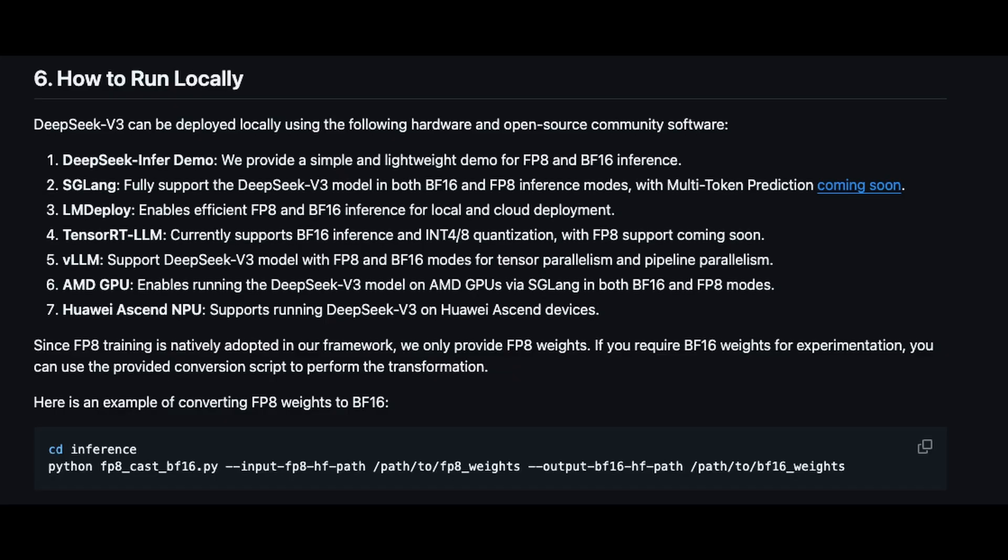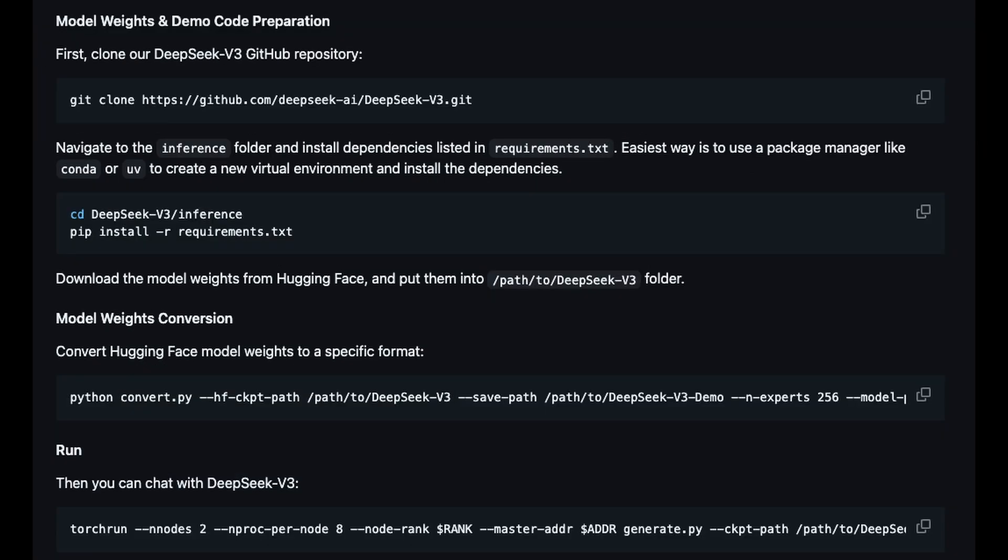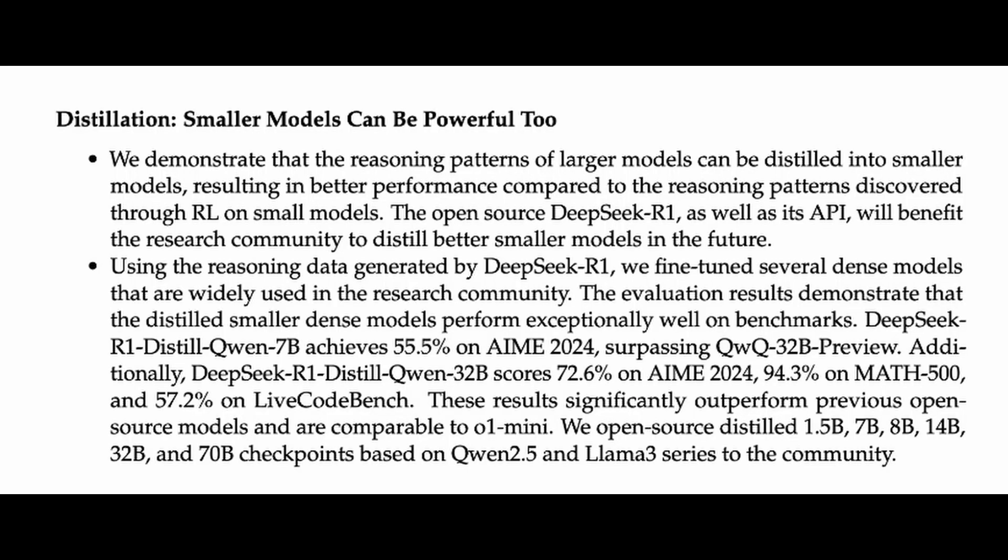But guess what? Here's the cool part. DeepSeek R1, like all of the DeepSeek models, is offering open weights. We're not saying open source exactly, since the training data isn't public. However, this is a game changer. Instead of paying OpenAI for every little thing, you can run R1 on your own server or even on your own computer for way less cash.